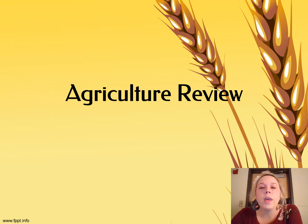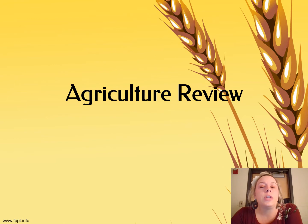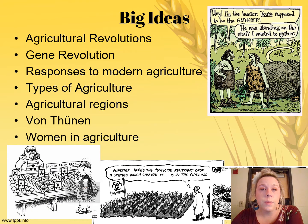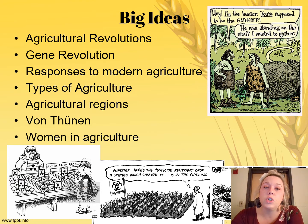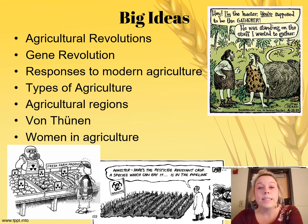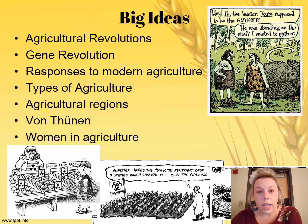Welcome to week three of our AP exam review. We're going to start with Unit 5, Agriculture. The big ideas we're going to cover are the agricultural revolutions, the gene revolution, responses to modern agriculture, types of agriculture, agricultural regions, the Von Thünen model, and women in agriculture.